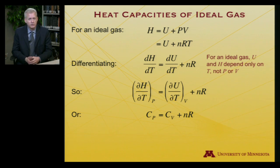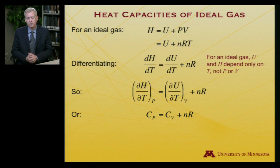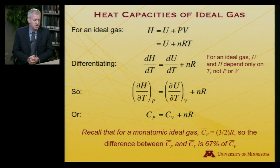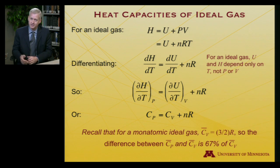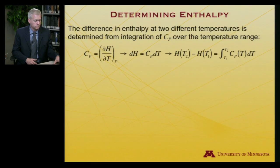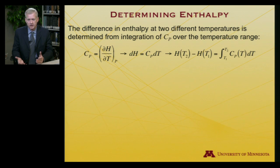So the heat capacity at constant pressure is always going to be greater than the heat capacity at constant volume. How much greater for an ideal gas? By a factor of N, the number of moles of the gas, times R. For a monatomic ideal gas, the molar heat capacity at constant volume is (3/2)R, which makes the molar constant pressure heat capacity (5/2)R — that's a 67% change, a non-trivial difference. It takes considerably more heat to raise the temperature by one degree at constant pressure because you're doing PV work expanding the gas.